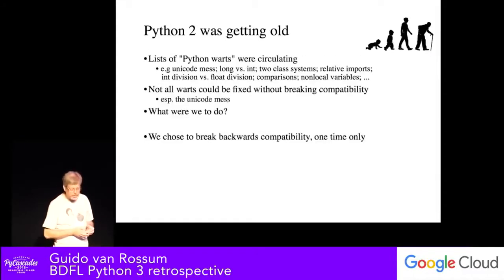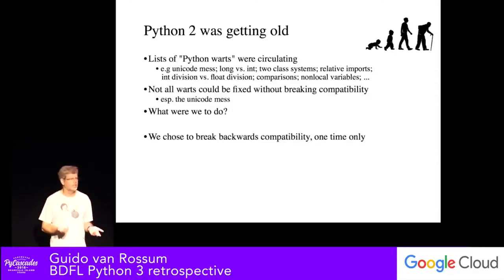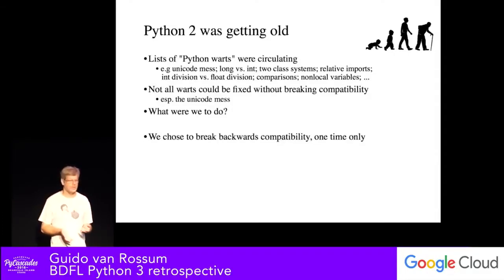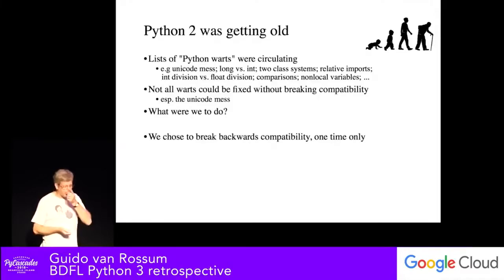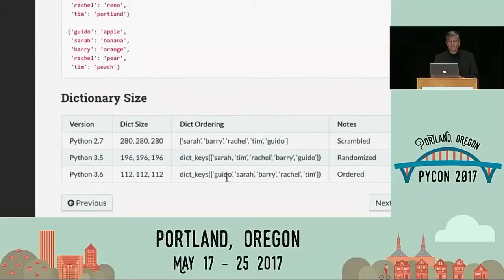What do we get next? Python 2 and we're talking about the bug factories. Then Python 3.6 came out. Is the size a little bit smaller? 112 bytes, which is pretty darn amazing.